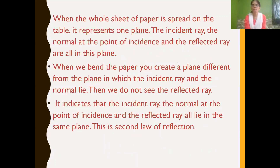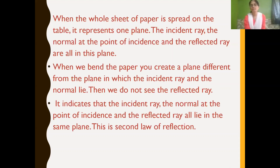Bring the paper back to its original position, and again you can see the reflected ray. When the whole sheet of paper is spread on the table, it represents one plane. The incident ray, the normal at the point of incidence, and the reflected ray are all in the same plane.